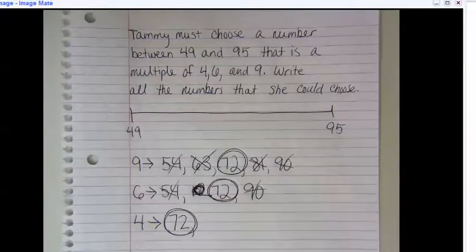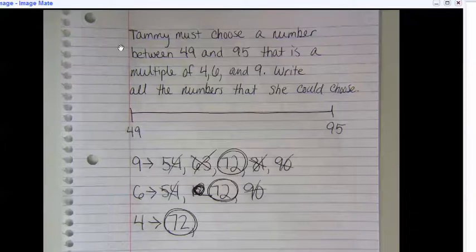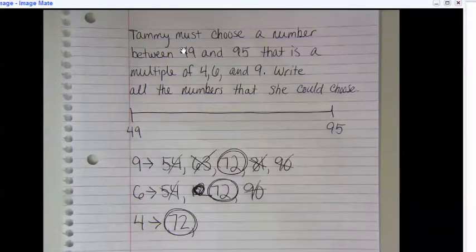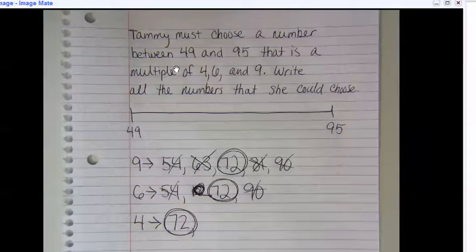Here are my notes. The first time I'm doing this kind of problem, I went ahead and wrote out what the original problem said for the most part. Tammy must choose a number between 49 and 95 that's a multiple of four, six, and nine. Write all the numbers she could choose.